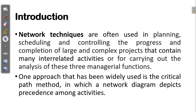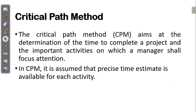One approach that has been widely used in project management is the critical path method, in which a network diagram depicts precedence among activities. The critical path method aims at the determination of the time to complete a project and the important activities on which a manager shall focus attention. In CPM, it is assumed that the precise time estimate is available for each activity.